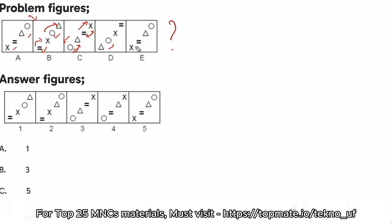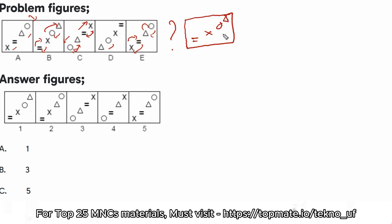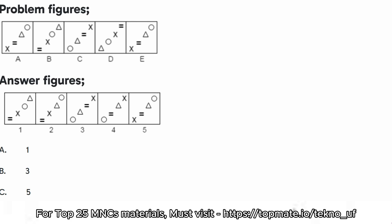In the next figure, you can expect the figures that were at the top right coming to the left bottom, and the figures at the left bottom coming to the top right — without changing their individual configurations. So the next figure is just a position shift: the triangle will be here, the circle here, X here, and equal-to here. Option A is the correct answer.